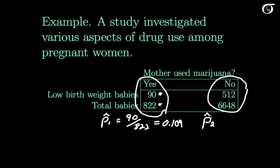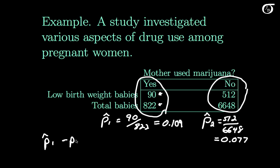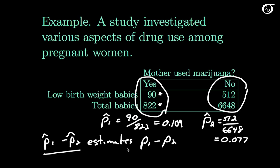The women who did not use marijuana during their pregnancy form our second sample, and p̂₂ is equal to 512 over 6648, which rounded to three decimal places is 0.077. The difference in sample proportions p̂₁ minus p̂₂ is going to estimate the difference in population proportions p₁ minus p₂. So this difference in our two statistics estimates this difference in our two parameters.